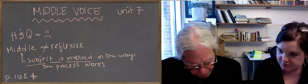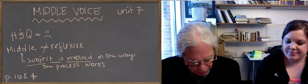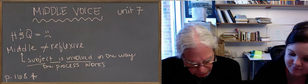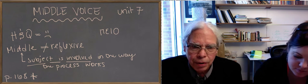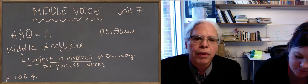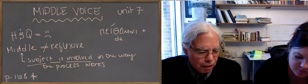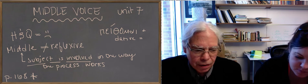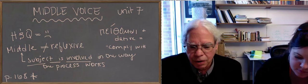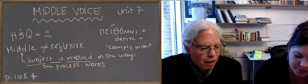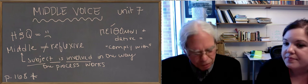And here's another one. There's patho, the verb to persuade. We had that in the last lesson. And in the middle it means not persuade oneself and not obey, which is the meaning the book gives, but comply with. In other words, it's again something happening inside. When you persuade somebody, you start yourself and you persuade someone else. But when you comply with someone, it's happening inside you. Is it helpful?